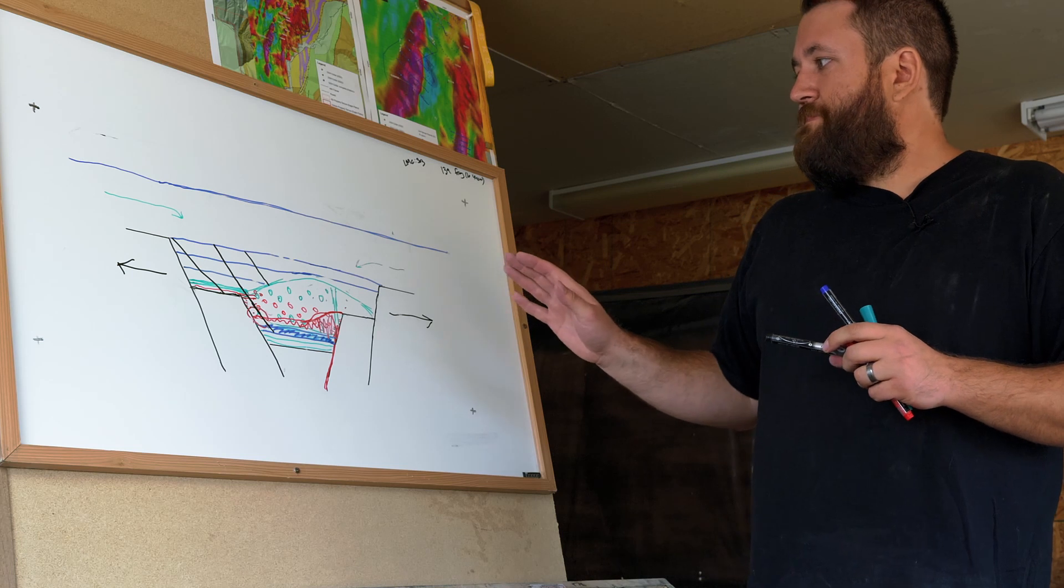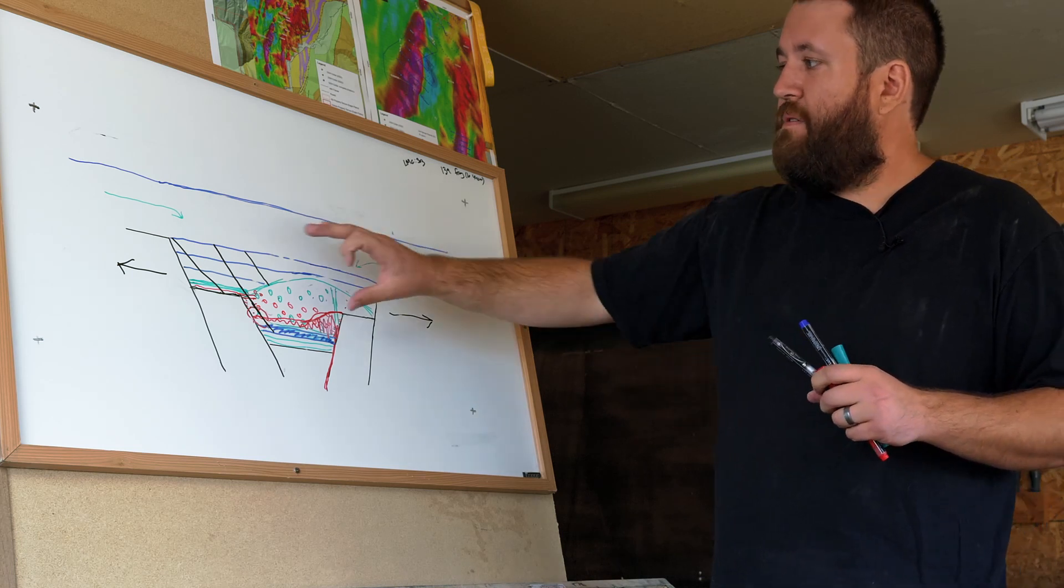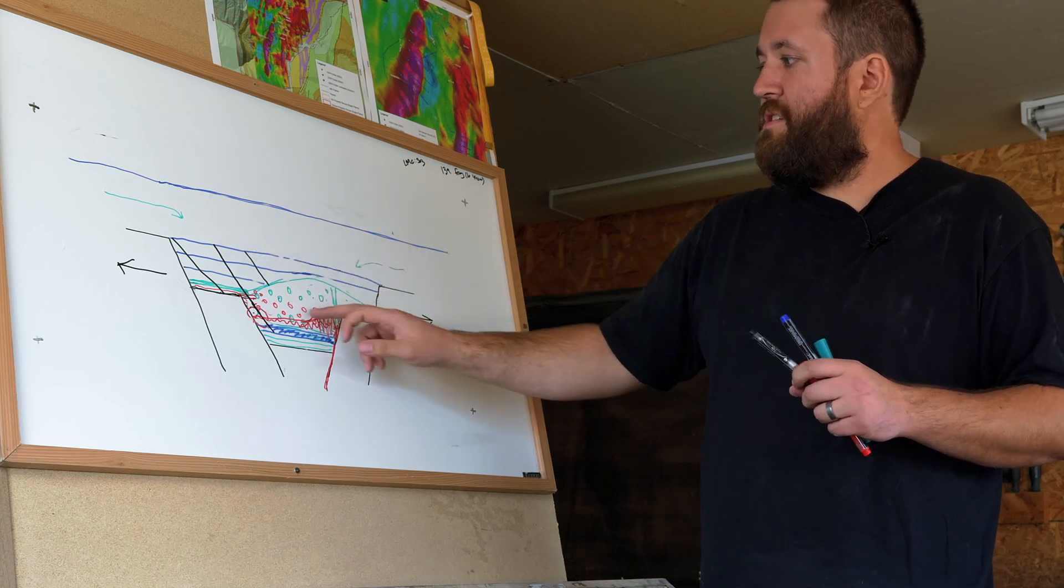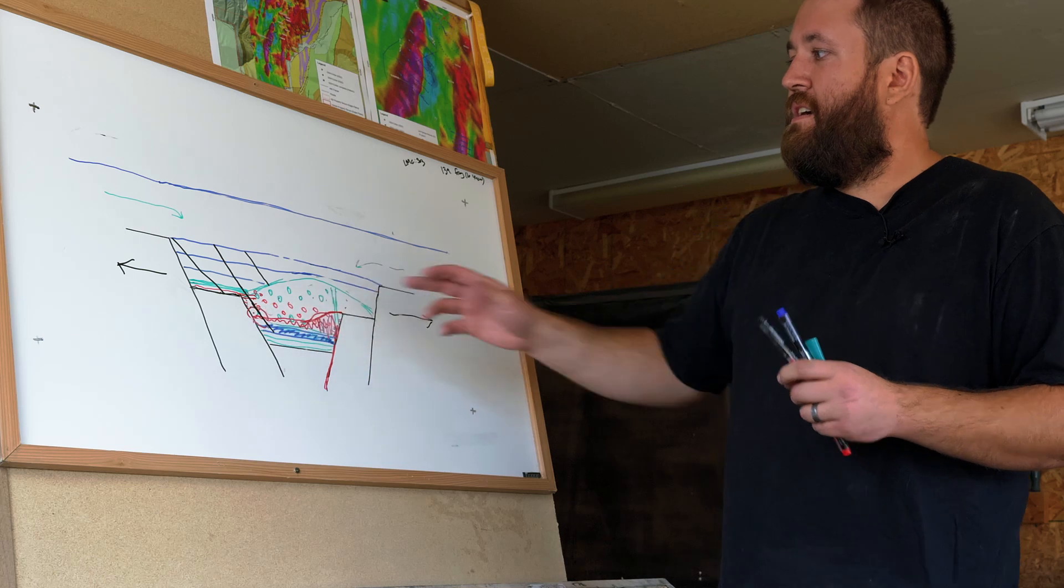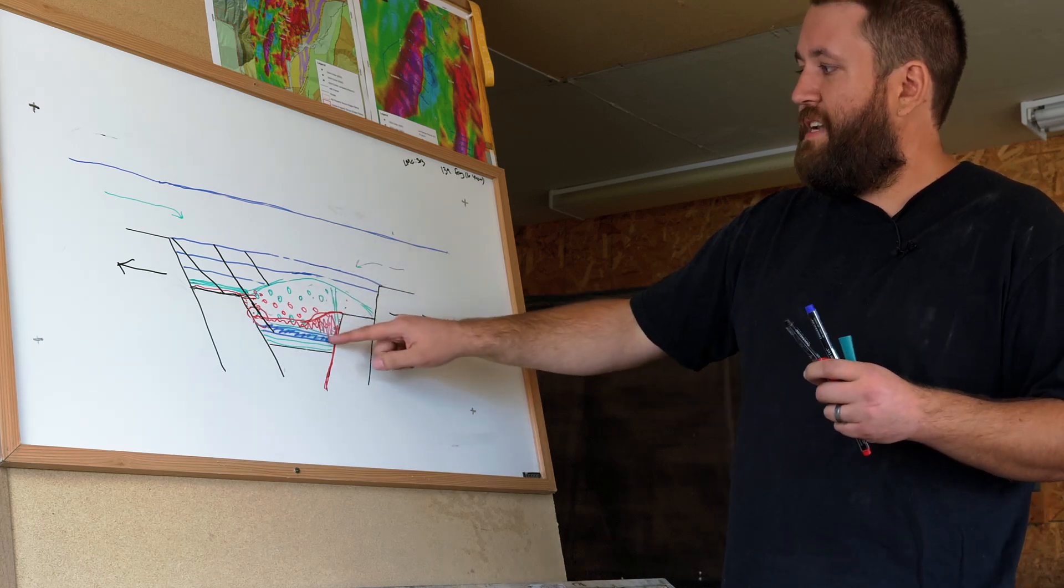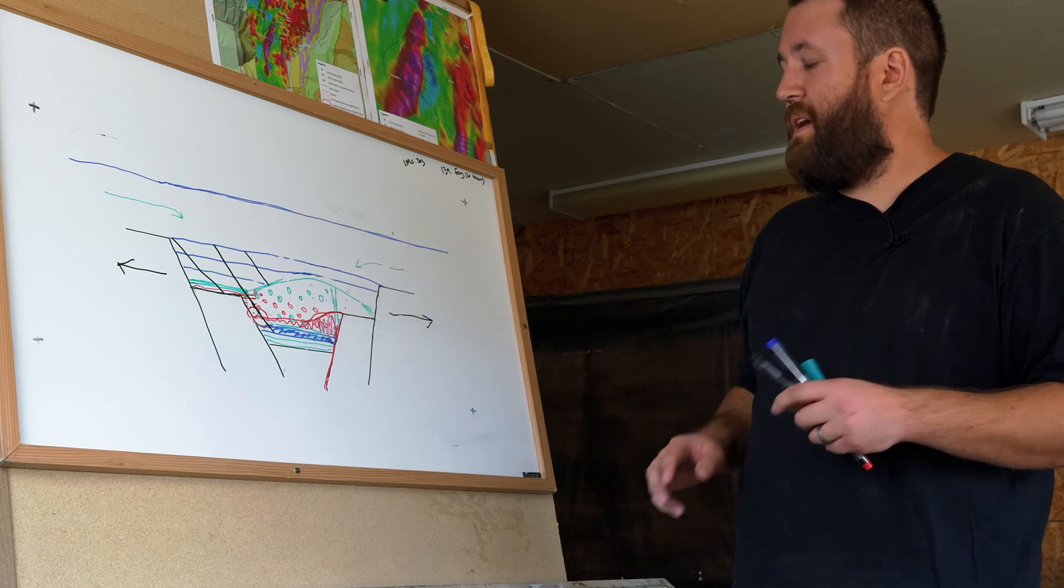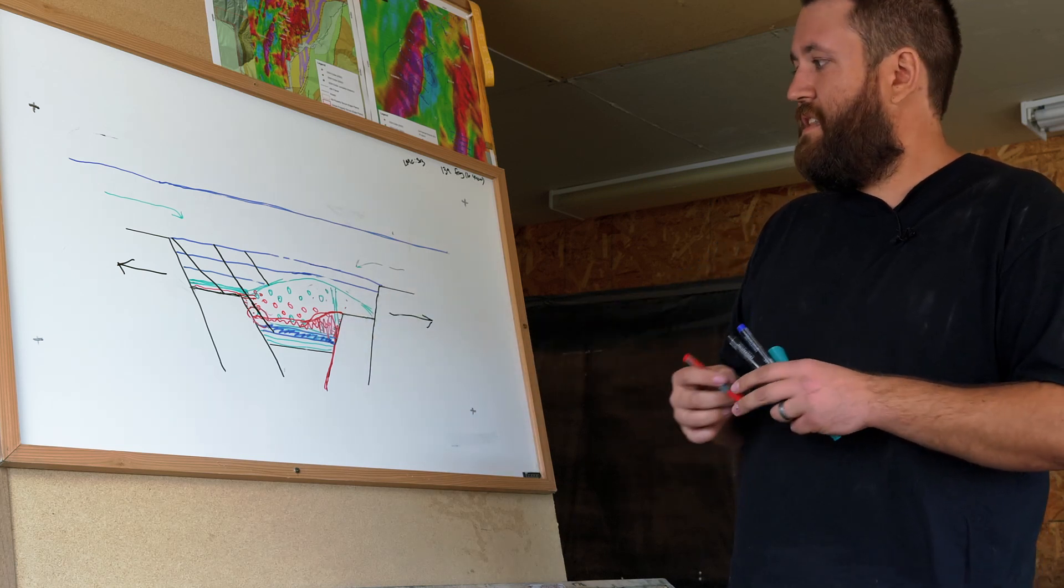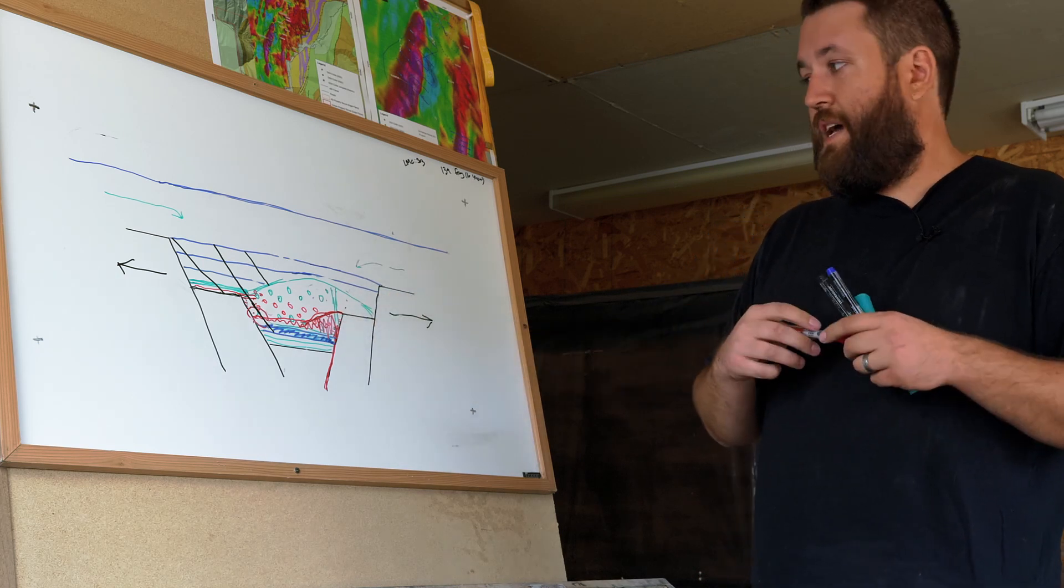Moving forward, what Eagle Plains is going to be working on is how, now that we have hit what we're interpreting to be the proximal edge of this ore band, do we move towards the vent source where the mineralization will be thickest and most economic? This is essentially the deposit that we're looking for and hoping for it to be a Sullivan analog.